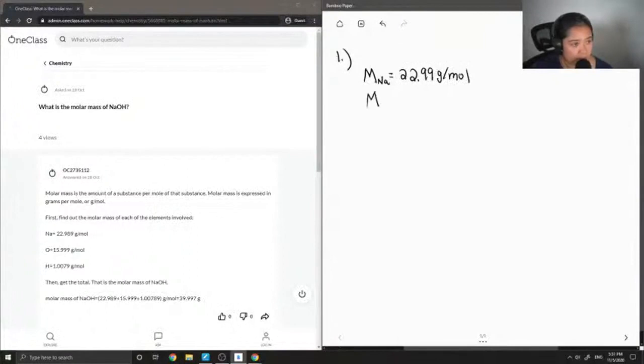We can do the same for oxygen. Its molar mass is around 16 grams per mole. And lastly for hydrogen, it is the lightest element on the periodic table and its molar mass is around 1.01 grams per mole.